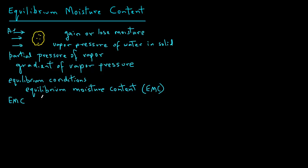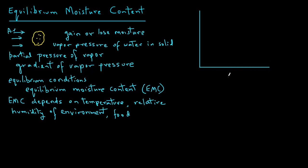Equilibrium moisture content depends on the temperature, the relative humidity of the environment, and the food itself. Let's plot the equilibrium moisture content that we obtain at different relative humidities, from 0 to 100. We call this equilibrium relative humidity because we're looking at equilibrium conditions.